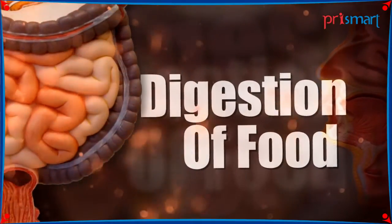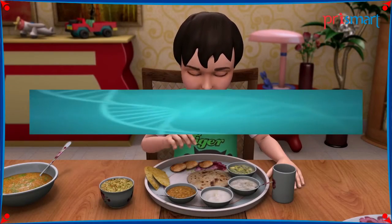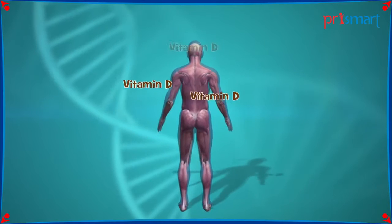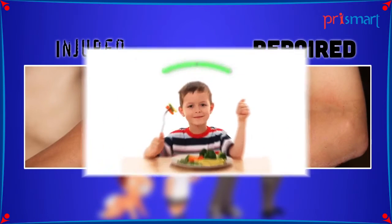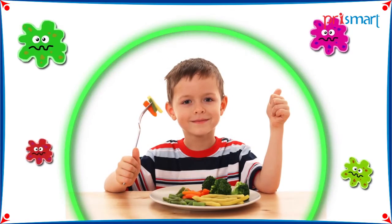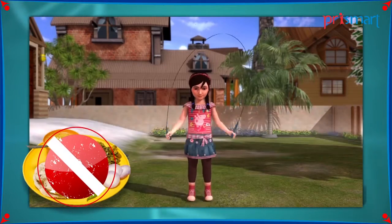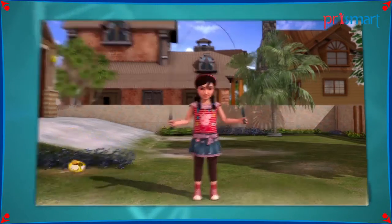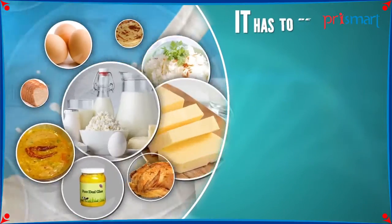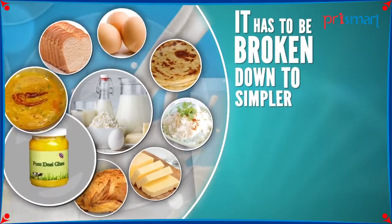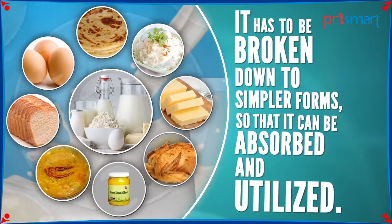Digestion of food. We know that the food we eat is used by the body to produce energy for growth and repair and for protection from diseases. But this food cannot be utilized by the body as such. The food we eat is very complex. It has to be broken down to simpler forms so that it can be absorbed and utilized.